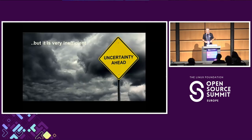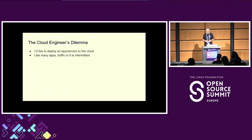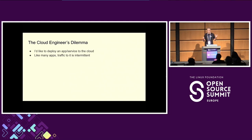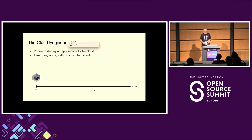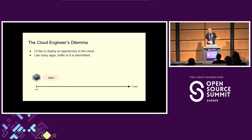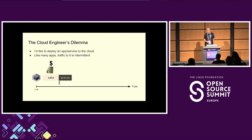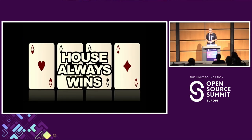The cloud is great, but it's very, very inefficient. If you want to deploy an app to the cloud, that's pretty easy to do, but the traffic to the app is often intermittent. First you deploy the app and it's idle, and that's money you're paying your cloud provider while your app is doing nothing. Then it becomes active, you're making money, and then it goes idle, and the cycle repeats — what I call 'the house always wins.'